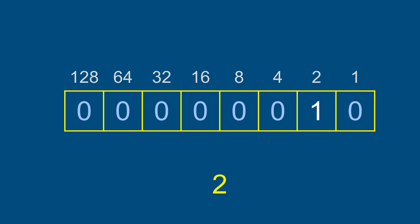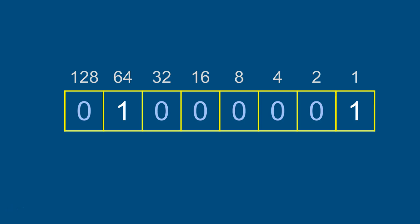Zero is all zeros, one is just the ones bit. Two has just the twos bit, zero in the ones place. There's actually a T-shirt that says 'there are 10 kinds of people in the world: those who understand binary notation and those who don't' - because in binary, '10' means two, not ten.